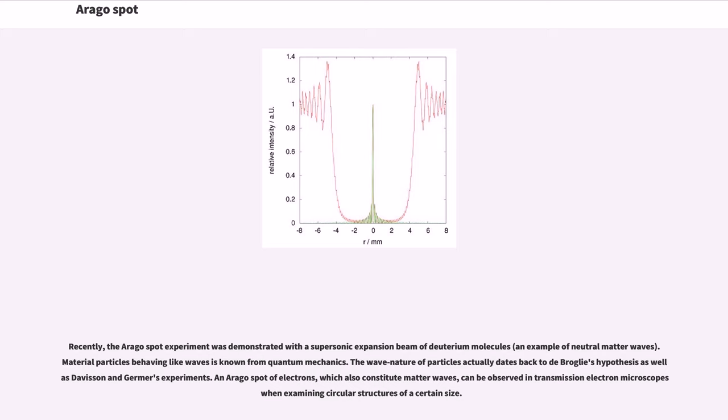Recently, the Arago spot experiment was demonstrated with a supersonic expansion beam of deuterium molecules. Material particles behaving like waves is known from quantum mechanics. The wave nature of particles actually dates back to de Broglie's hypothesis as well as Davisson and Germer's experiments. An Arago spot of electrons, which also constitute matter waves, can be observed in transmission electron microscopes when examining circular structures of a certain size.